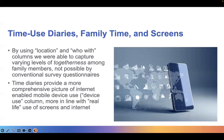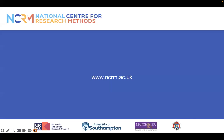I have used this short example to show that the use of location and who-with columns allowed us to capture varying levels of togetherness among family members that were not possible with conventional social surveys. The diaries provide a more comprehensive picture of internet-enabled mobile device use, and the device use column is more in line with real-life use of screens, recognizing that internet use takes place as a background activity nowadays. If you're interested in time use research, I invite you to engage with literature that has used time diaries to explore innovations brought about by this method.